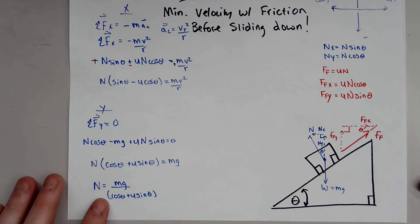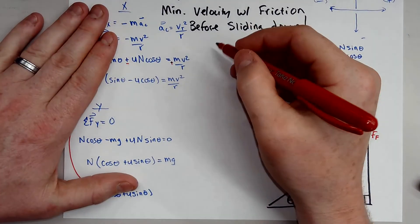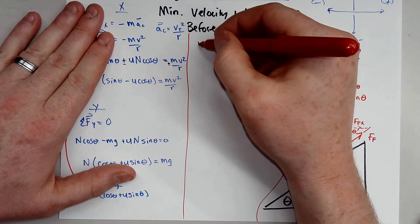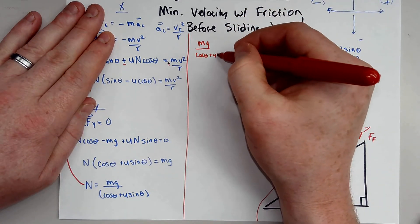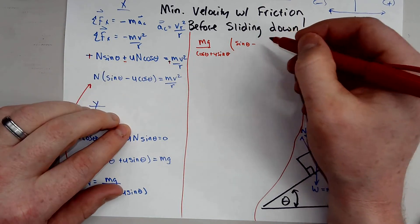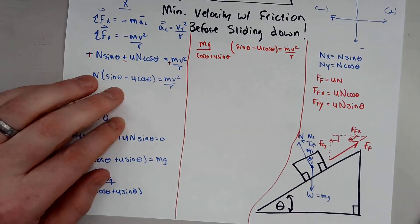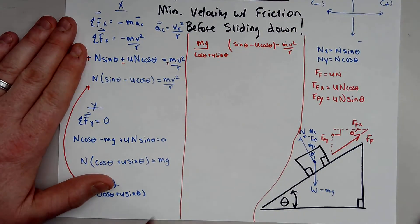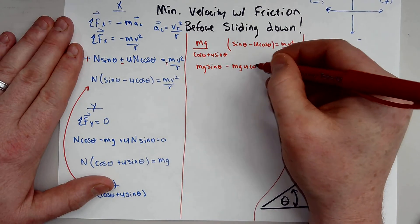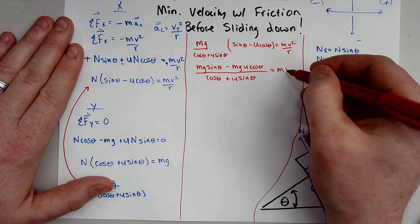Now I'll substitute this normal force into the x-direction equation. Plugging N = mg / (cosine theta + mu sine theta) into N(sine theta minus mu cosine theta) = m·v² / r gives: mg(sine theta minus mu cosine theta) / (cosine theta + mu sine theta) = m·v² / r.